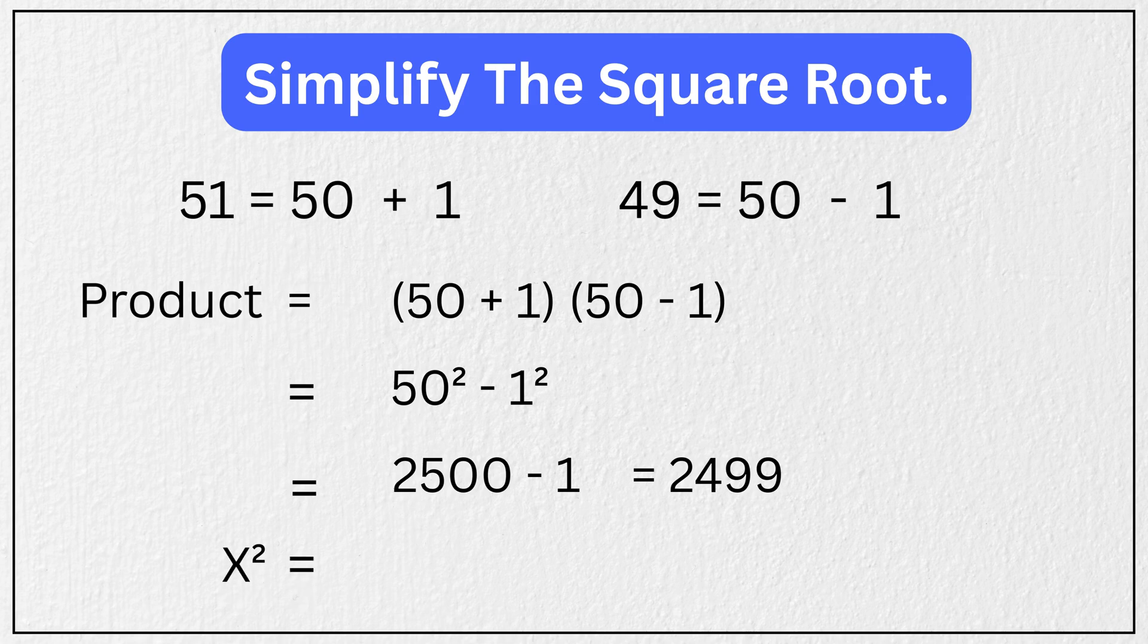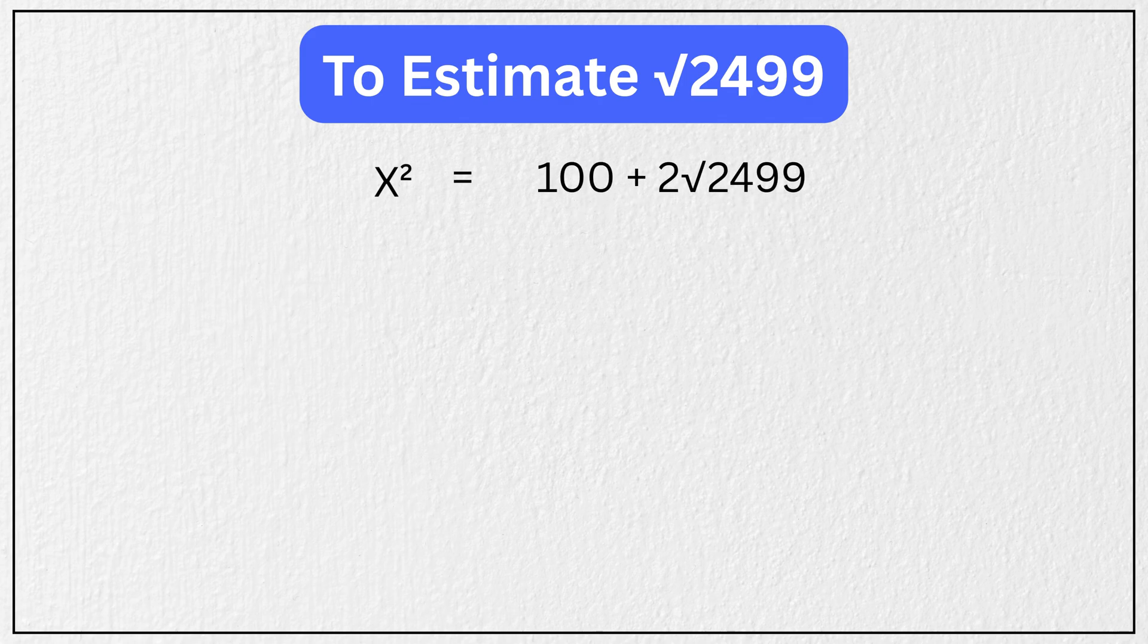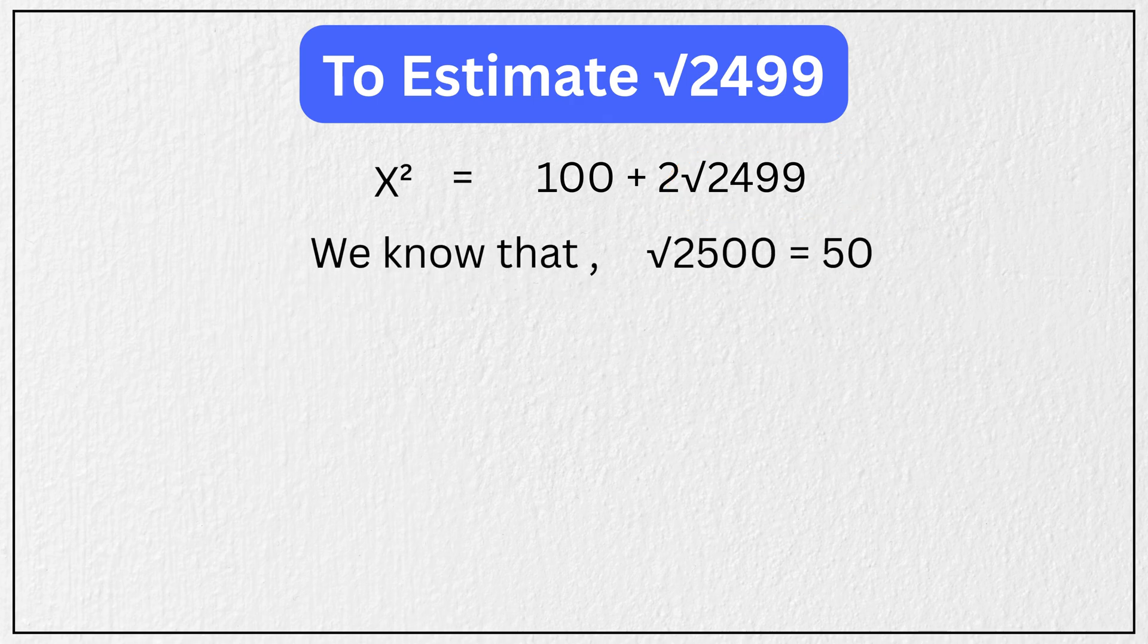So x² = 100 + 2√2499. Now we want to estimate √2499. We know that √2500 = 50.